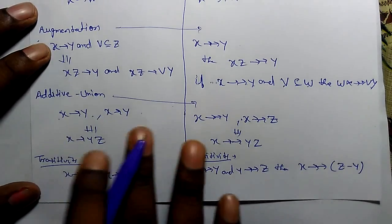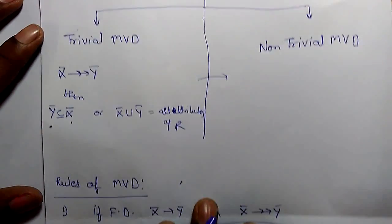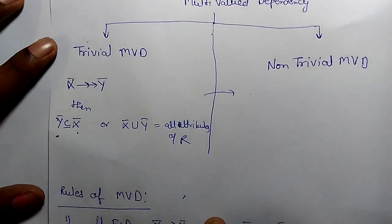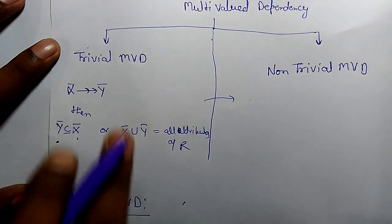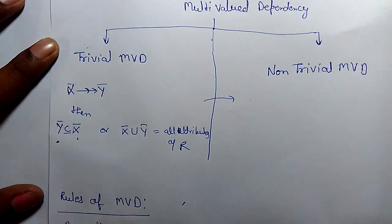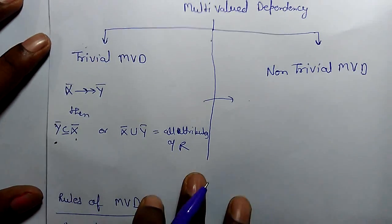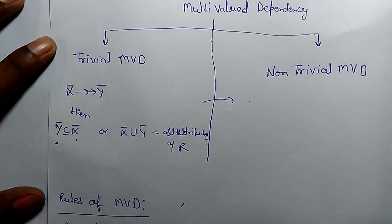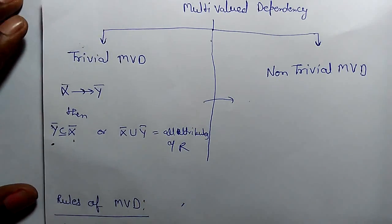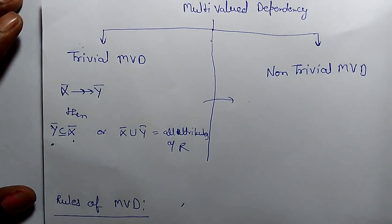So these are the rules for multivalue dependency. The most important part is the trivial and non-trivial multivalue dependency, which we will use in the fourth normal form. Thank you.